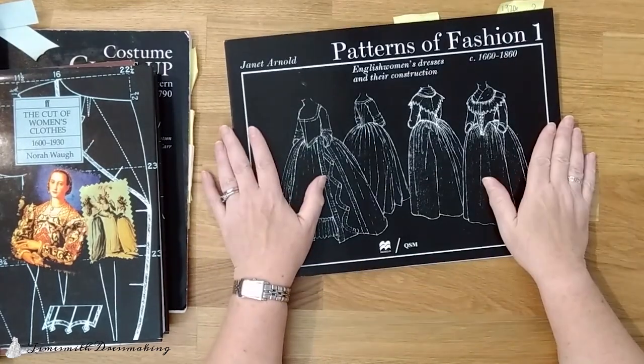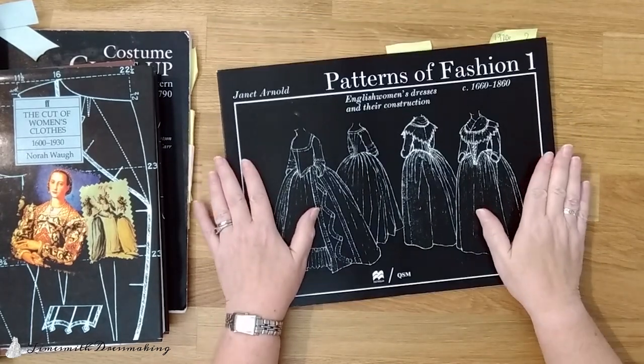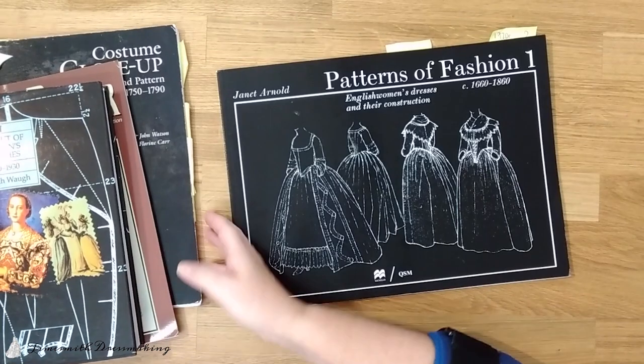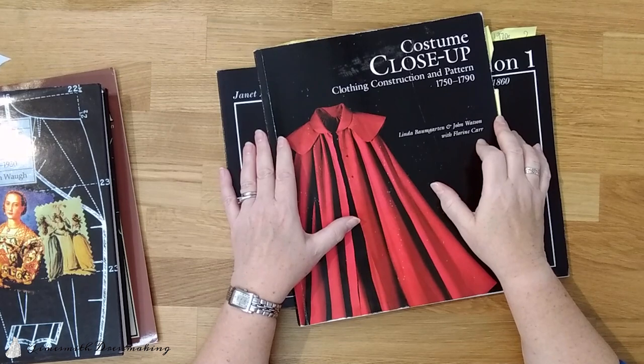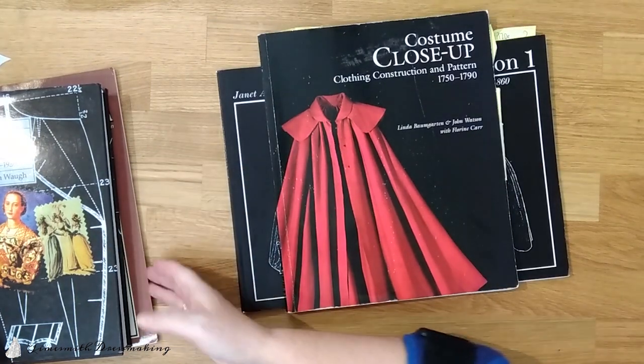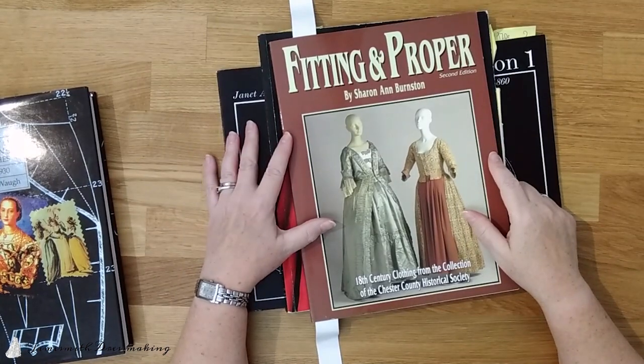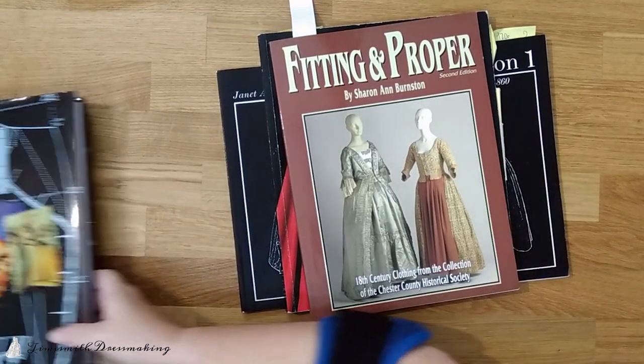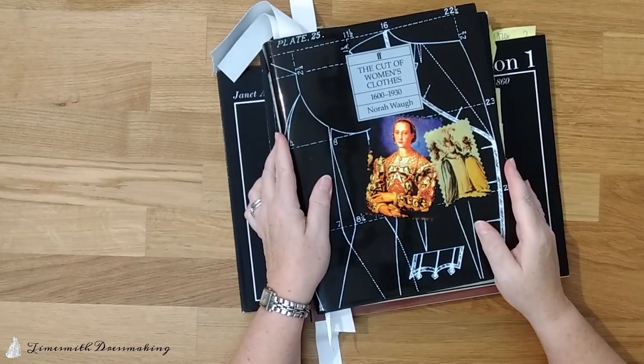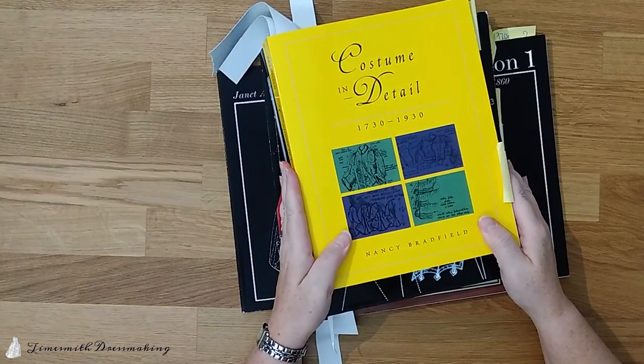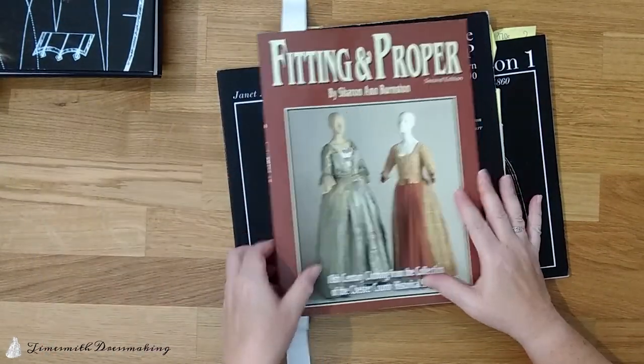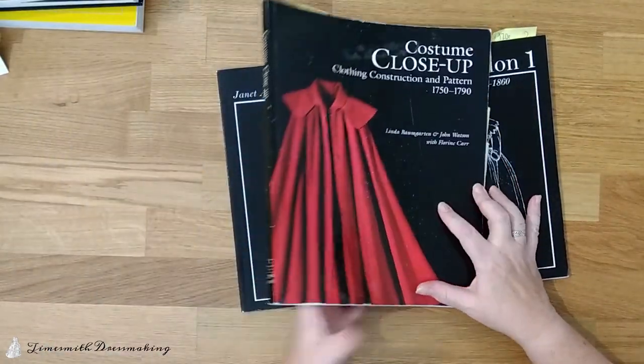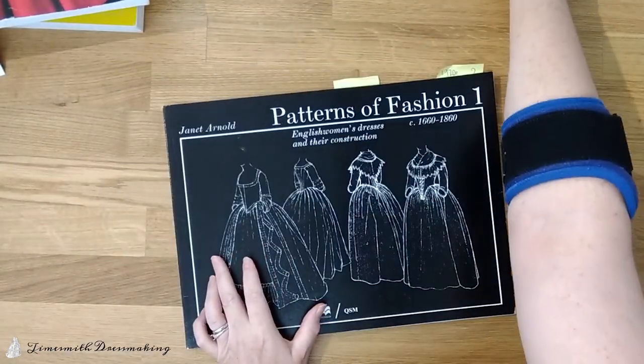So, first of all, we have Patterns of Fashion 1 by Jana Arnold, that's very well known. Then we have Costume Close-Up by Linda Baumgartner with a couple of her colleagues at Colonial Williamsburg. We have Fitting and Proper by Sharon Ann Burnston. We have The Cut of Women's Clothes by Nora Waugh. And lastly, we have Costume and Detail by Nancy Bradfield. Now, we're going to use similar criteria as we did with the patterns to determine what their strengths are, perhaps what their weaknesses are, what they can best be used for.